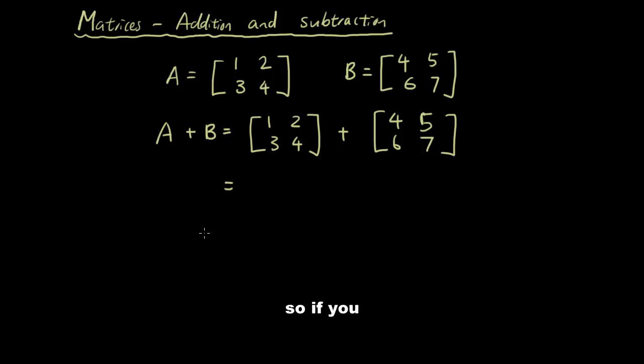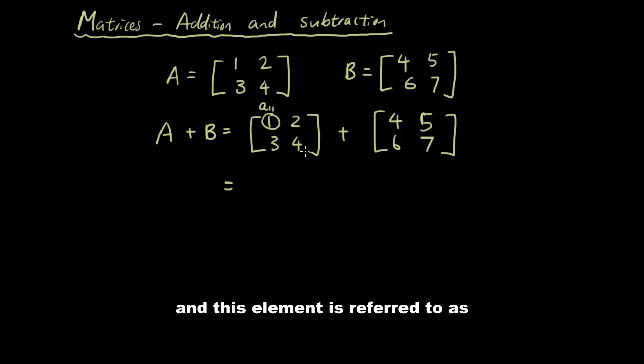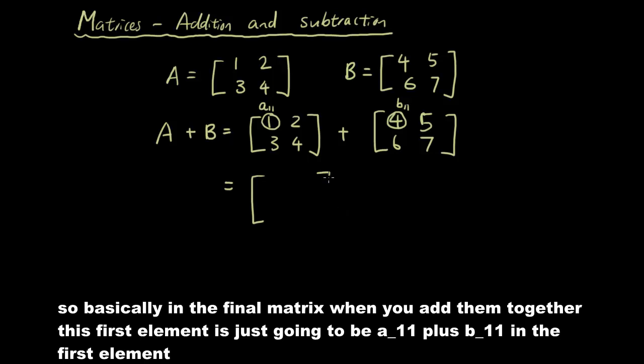So if you had a look at our previous matrices lesson, you would know that this element is referred to as A subscript 1 1. And this element is referred to as B subscript 1 1. So basically, in the final matrix, when you add them together, this first element is just going to be A_11 plus B_11 in the first element.